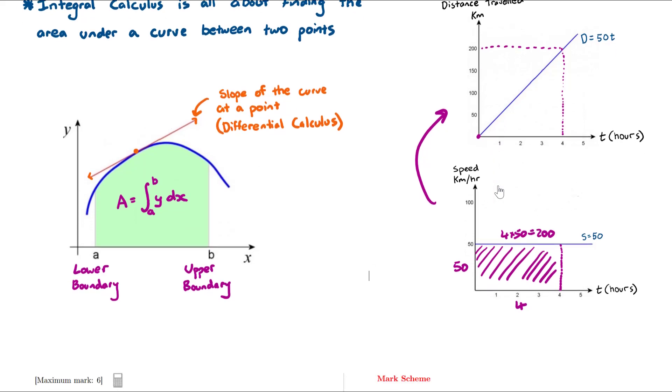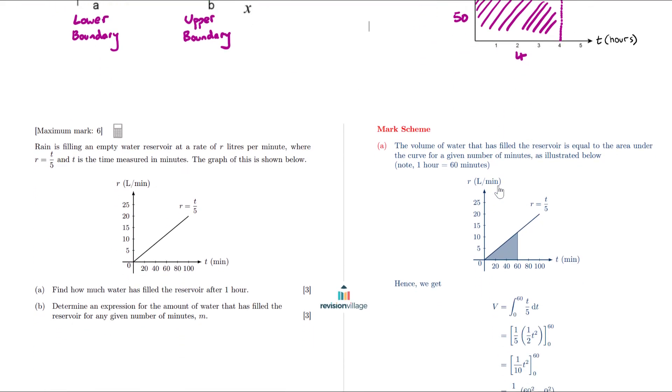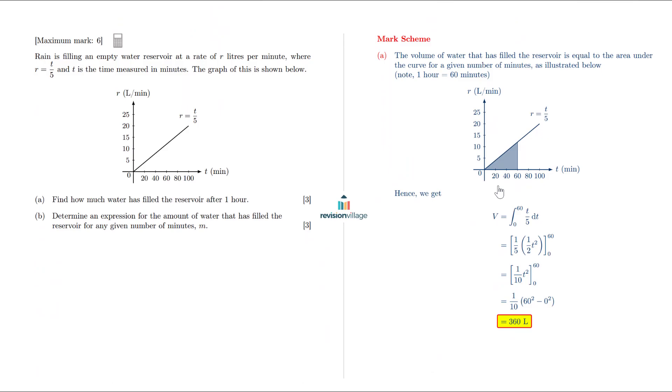And that's important because sometimes in exam questions, you'll actually only be given the derivative. And I have an example here from the question bank. In this question here, you're actually given the rate of change, or the derivative on the vertical axis. In this case, this is the rain filling an empty water tank. So the vertical axis isn't the amount of water, it's actually the rate at which the water is entering the tank.